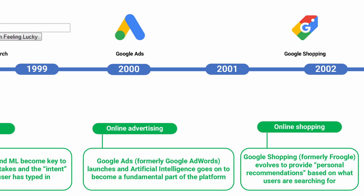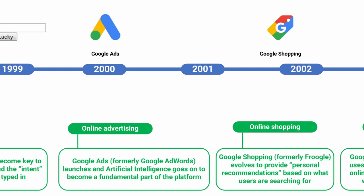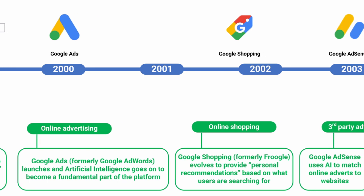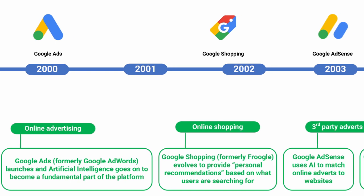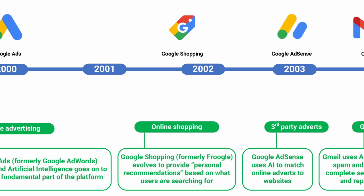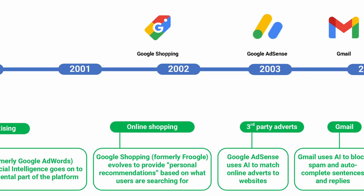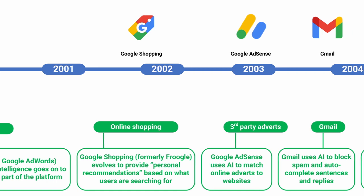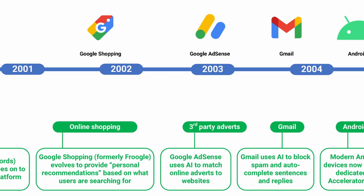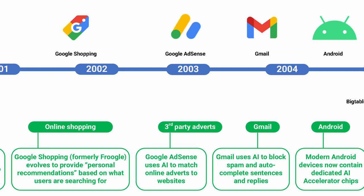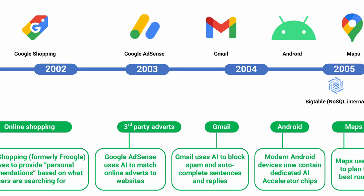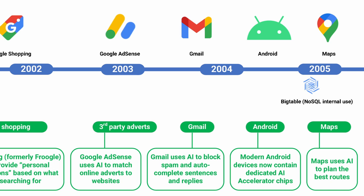As we move into online advertising, we have Google Ads, formerly known as Google AdWords, which launches and uses artificial intelligence to become a fundamental part of the platform, matching adverts and sites together. Google Shopping, formerly Frugal, evolves to provide personal recommendations based on what users are searching for. Around 2003, Google starts to use AdSense for third-party adverts, again using AI to match online adverts to websites.